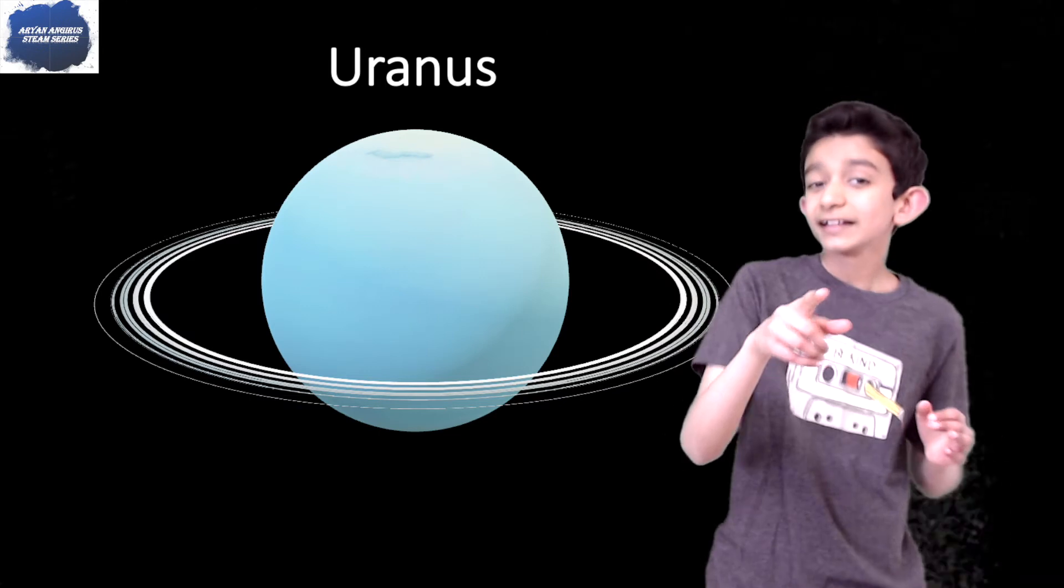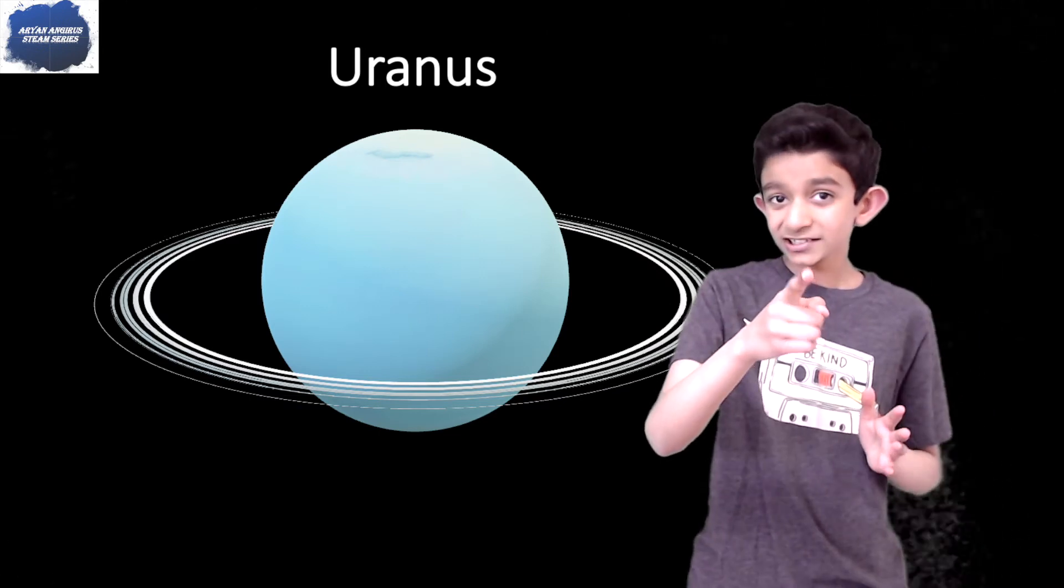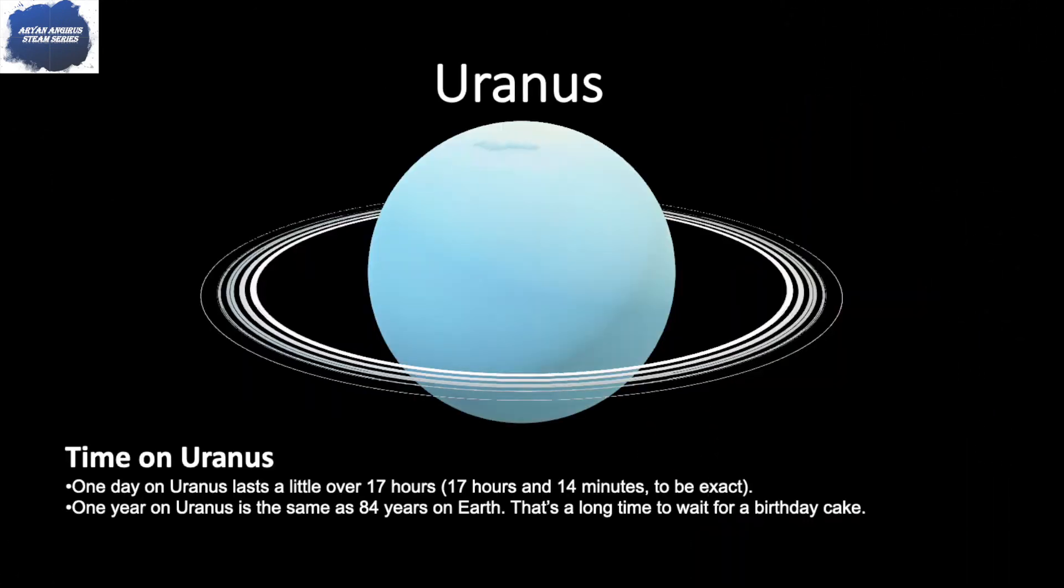Time on Uranus: one day on Uranus lasts a little over 17 hours—17 hours and 14 minutes to be exact. One year on Uranus is the same as 84 years on Earth. That's a long time to wait for a birthday cake.